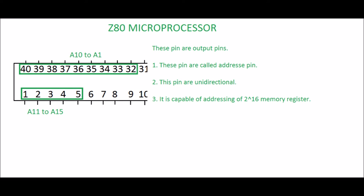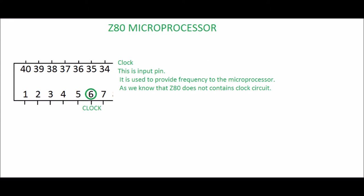It is capable of addressing 2 to the power 16 memory registers. Pin 6 is the Clock pin, which is an input pin used to provide frequency to the microprocessor. As we know, the Z80 does not contain a clock circuit on chip.